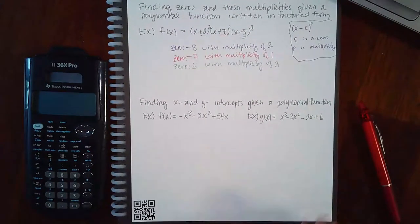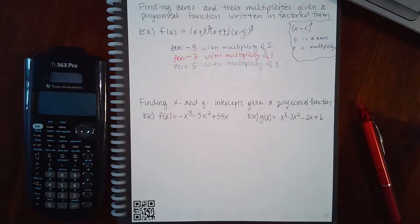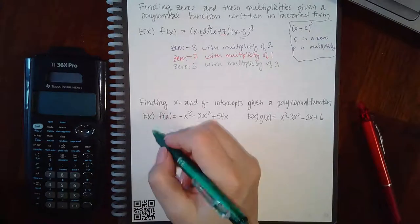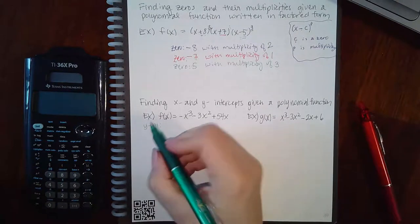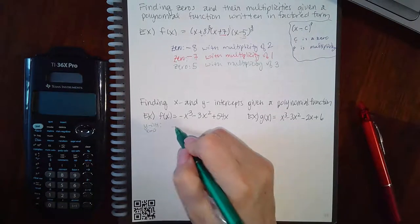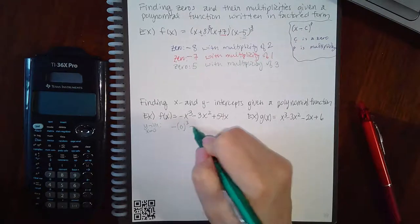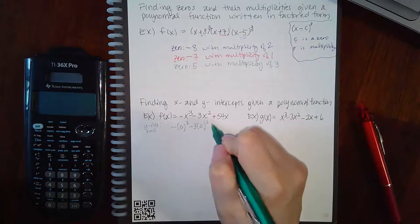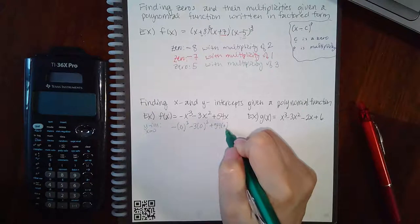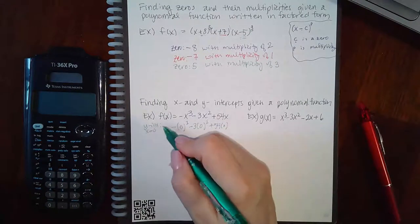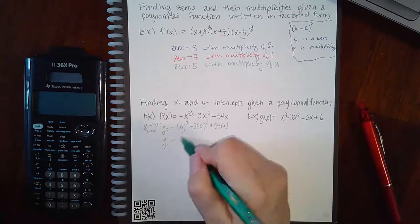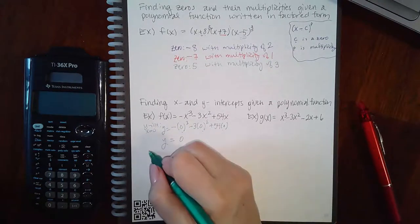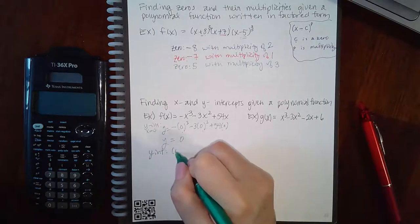Now on the next topic, it says find x and y intercepts given the polynomial function. So if I want to find the y intercept, that's easy. You just plug in x for zero. So I get negative zero cubed minus 8 times zero squared plus 54 times zero. Well, what would I end up with? I end up with zero minus zero plus zero, which is just zero. So the y intercept is going to be zero comma zero.